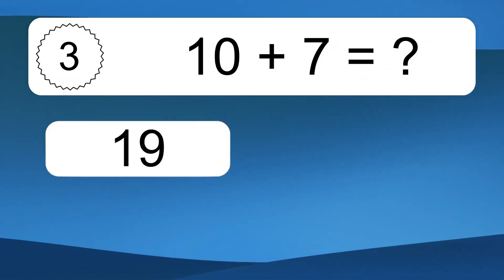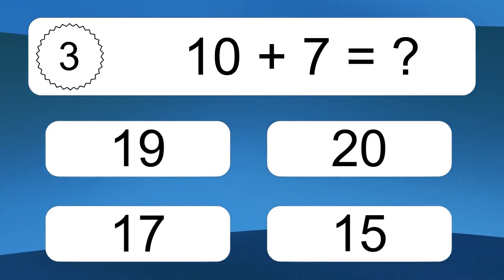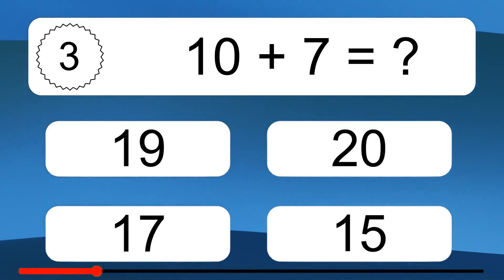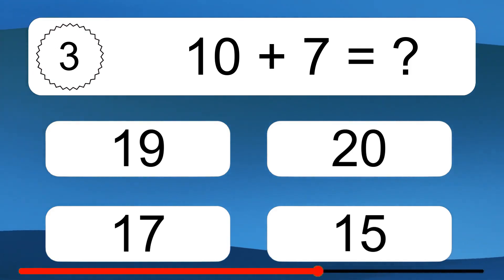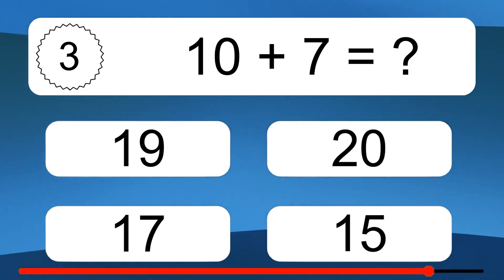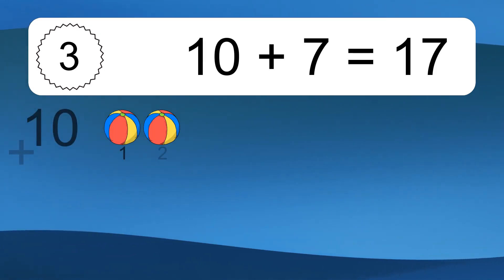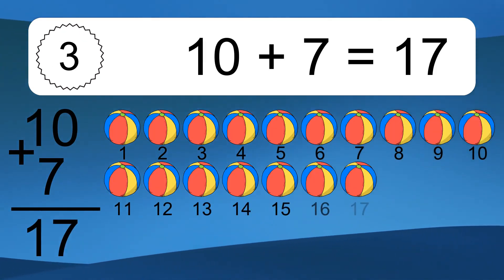10 plus 7 equals what? 10 plus 7 equals 17.